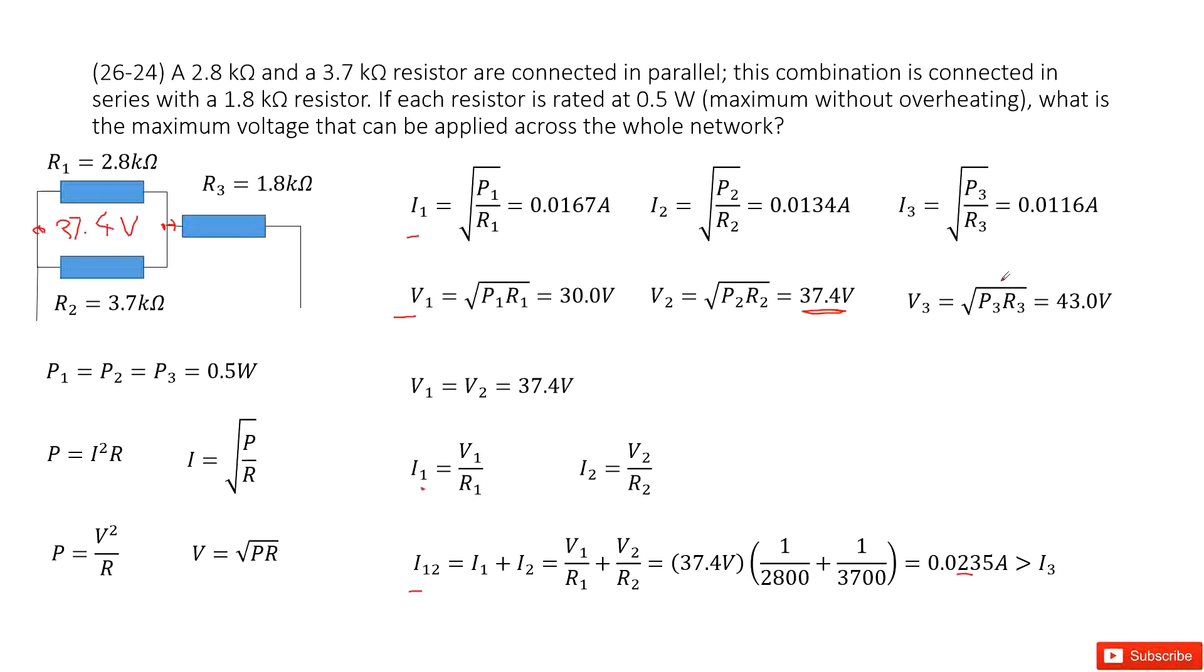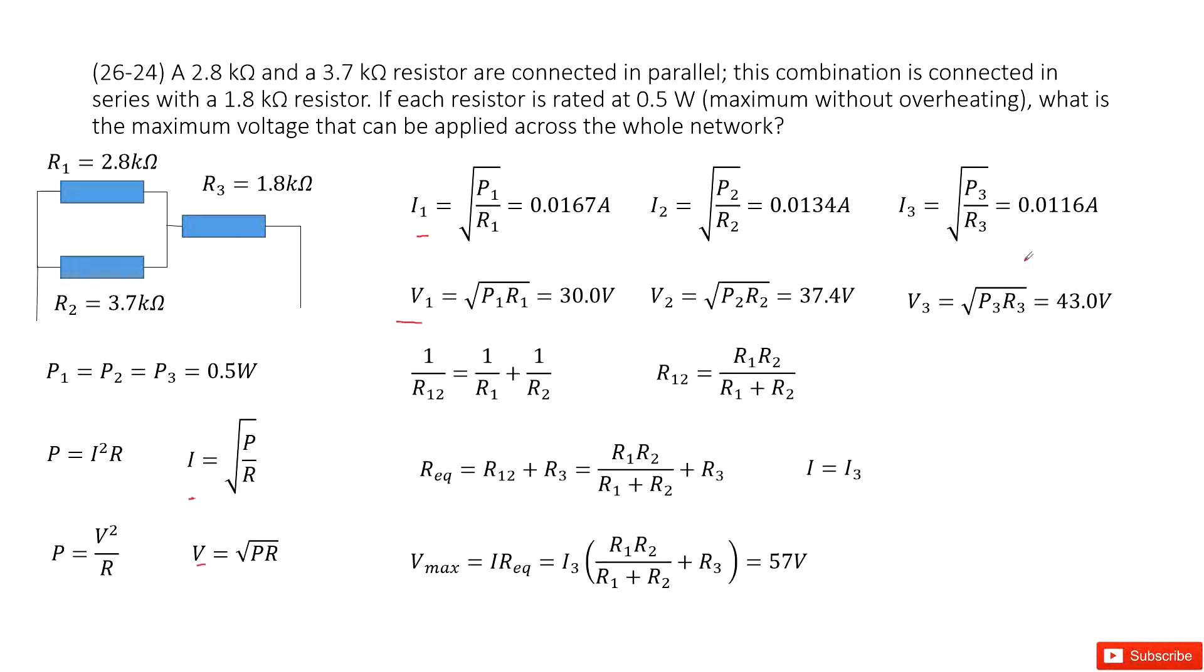So that means if we do the calculation, if we do this part work, the resistor R3 will burn out. So we cannot do that. So that means we need to satisfy the requirement. The current goes through I3 should be less than the standard current for I3. So that means we need to do this way.